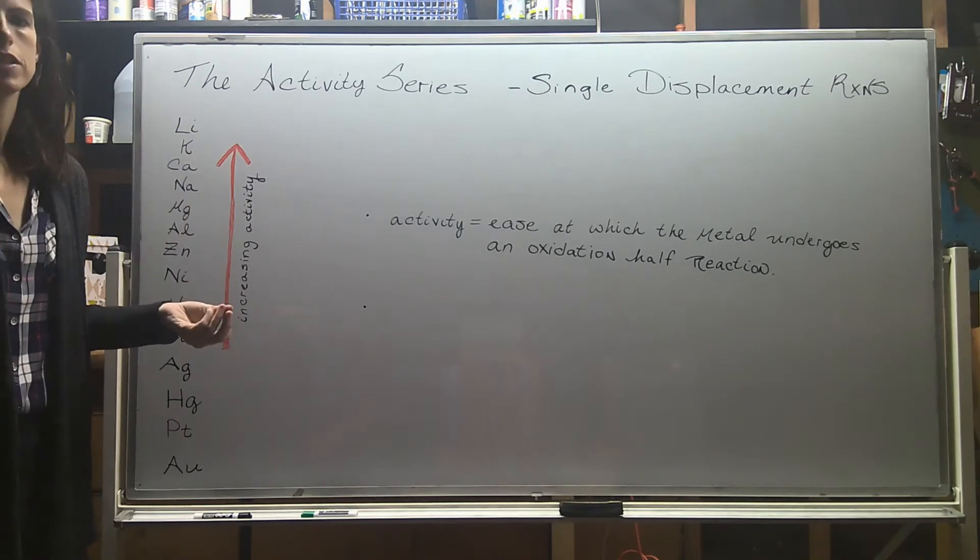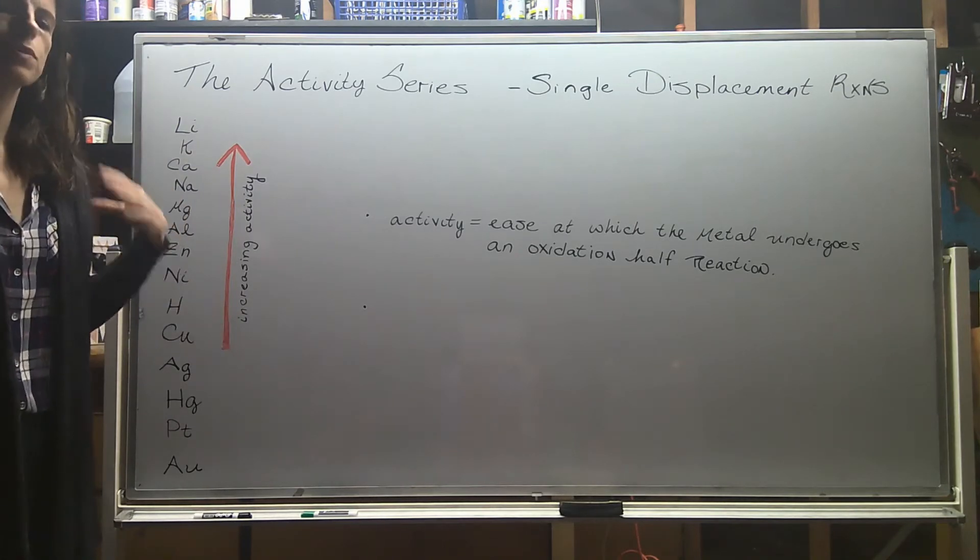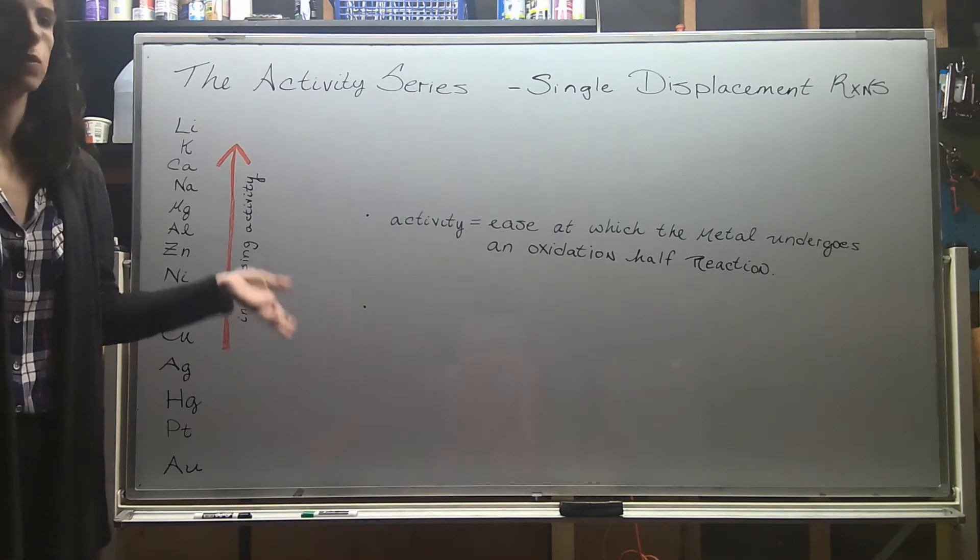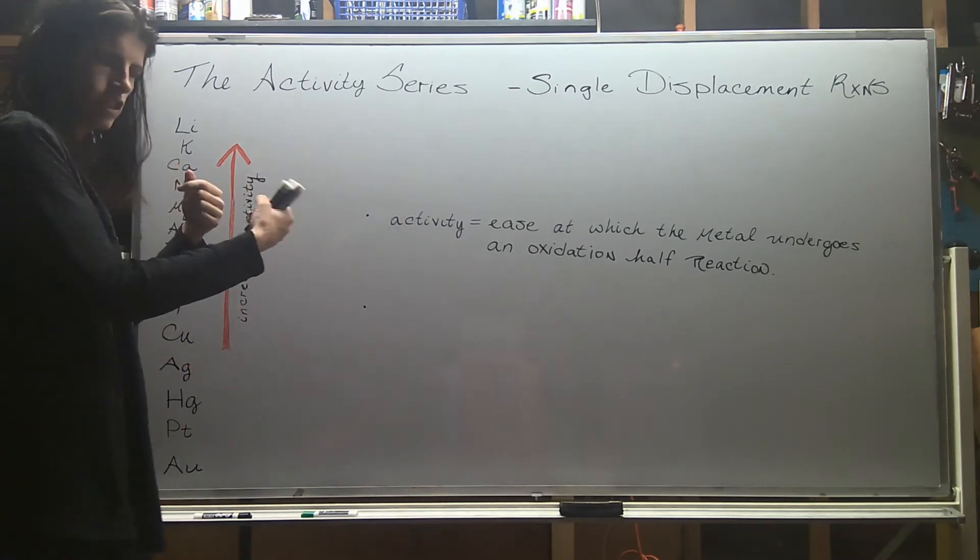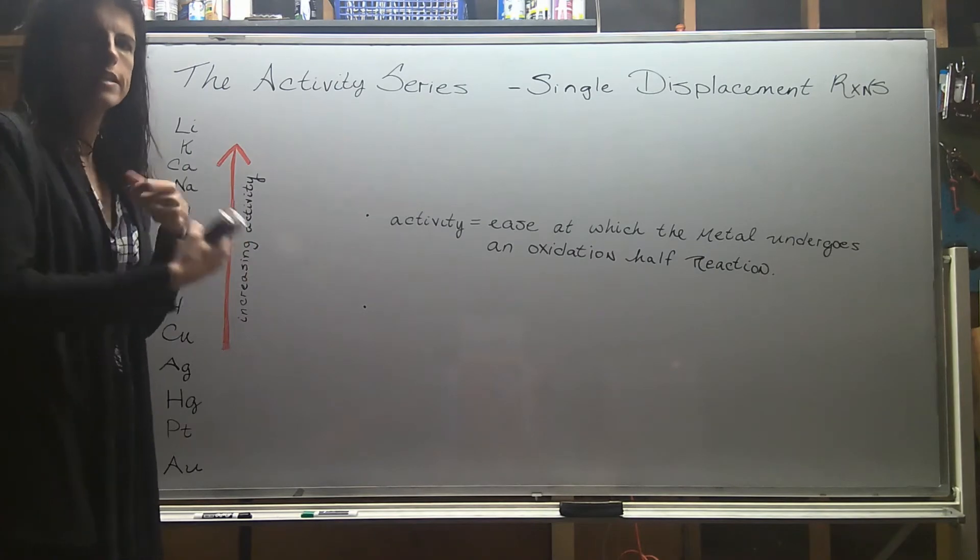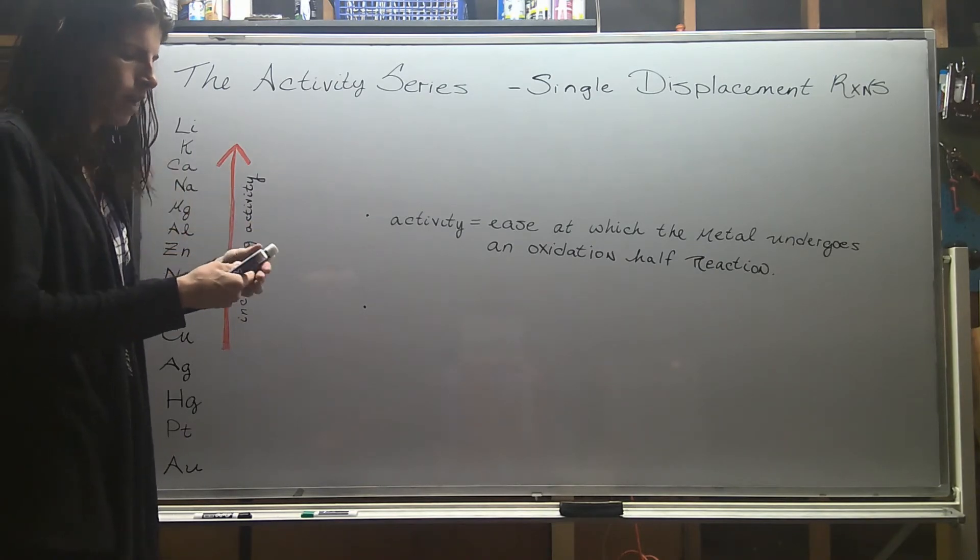Here we're going to look at the activity series, which is used to predict if single displacement reactions will occur. As a reminder, a single displacement reaction is when you have some sort of couple, typically an ionic compound, but not always.